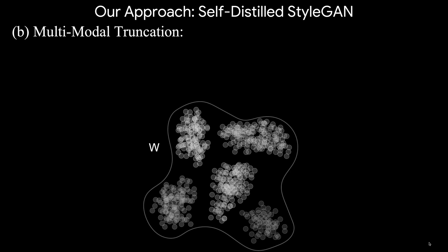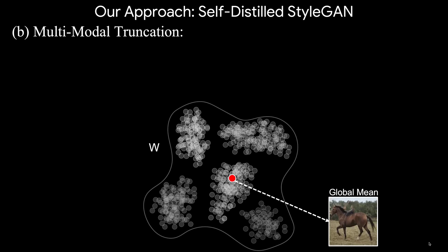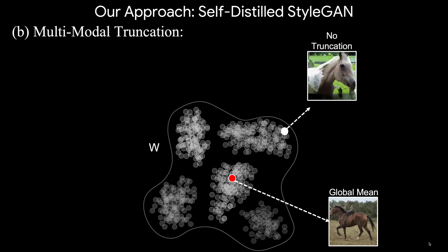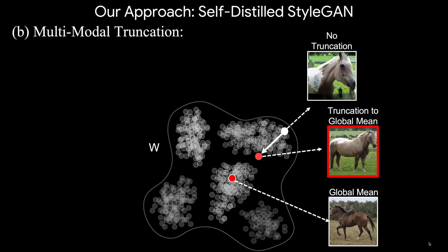In the second step, in order to handle the multimodal nature of the remaining filtered data, we employ a multimodal variant of the StyleGAN truncation trick, which occurs at inference time. Here, we graphically depict the latent space W of StyleGAN. The commonly used truncation trick first computes the latent global mean, then interpolates a sampled latent code with that global mean vector to generate the output image. This truncation has been shown to provide better quality and realism, however it comes at the expense of diversity. We find the degradation of diversity more acute when the dataset is multimodal, since pushing the output toward a single global mean induces mode collapse.